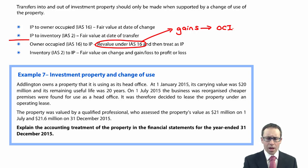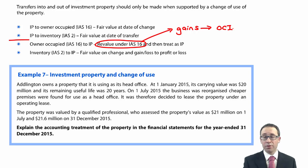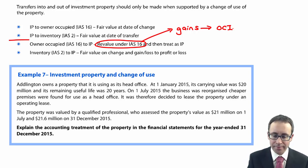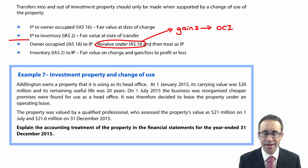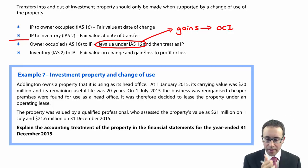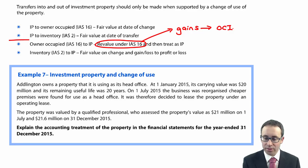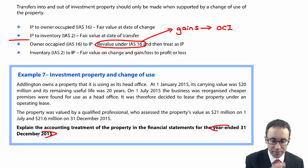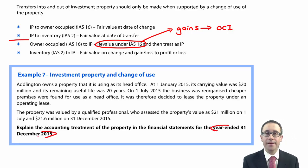Now we have a little example on investment property and change of use. The question asks us to explain — so narrative, maybe supplementing it with some numbers — the accounting treatment of the property in the financial statements for the year ended December 2015.